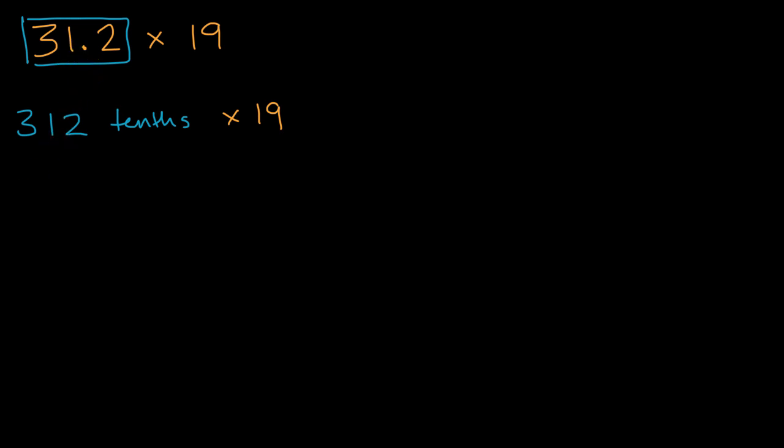I'll also show another strategy, but let's just do that. So if we were to just multiply 312 times 19, this is going to be, let's see, two times nine is 18, one times nine is nine, plus one is 10, three times nine is 27, plus one is 28. If what I just did looks unfamiliar, we have videos that explain how this process works.